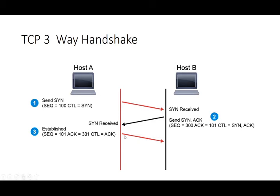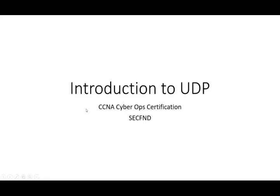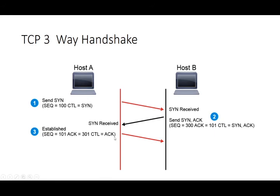Host A receives the SYN-ACK from Host B. It has acknowledged that it received the first 100 bytes and is ready for byte 101, and it is sequencing 301. Host A now replies back with the final ACK — the final step in the three-way handshake. So it is always SYN, SYN-ACK, and ACK. Host A acknowledges that it received the first 300 bytes, is ready for 301, and is going to send sequence 101 — indicating the next data to send. 101 ready for 301. And now the three-way handshake is established.